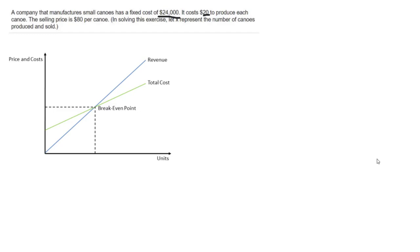So if we let our cost function, and we could call this y equals 24,000 plus 20 times however many canoes we make, and then it says the selling price, so that would be our revenue, would equal $80 per canoe.